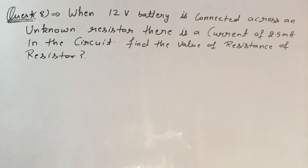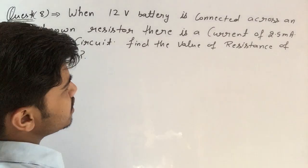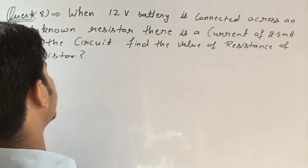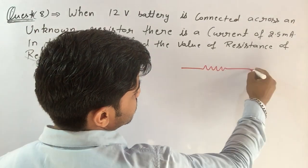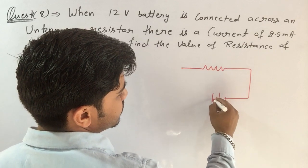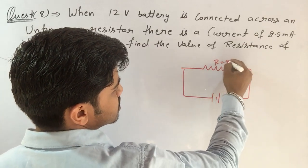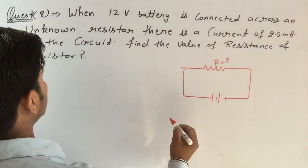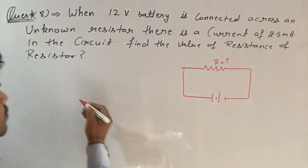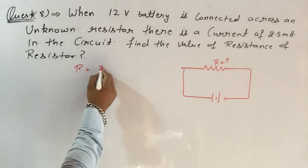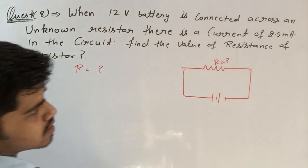This is our question number 8. When a 12-volt battery is connected across an unknown resistor, let us take a resistor and a battery. Resistance of the resistor is unknown.